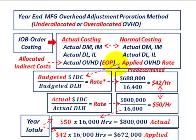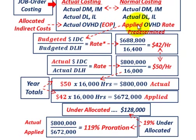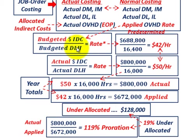We're going to have to make an accounting adjustment between what we applied versus the actual overhead. For our calculations to determine our applied overhead rate, that's simply taking our budgeted total indirect cost for the year — $688,800 — divided by the budgeted total direct labor hours for the year, which was 16,400 hours. That gives us a $42 per hour overhead rate.